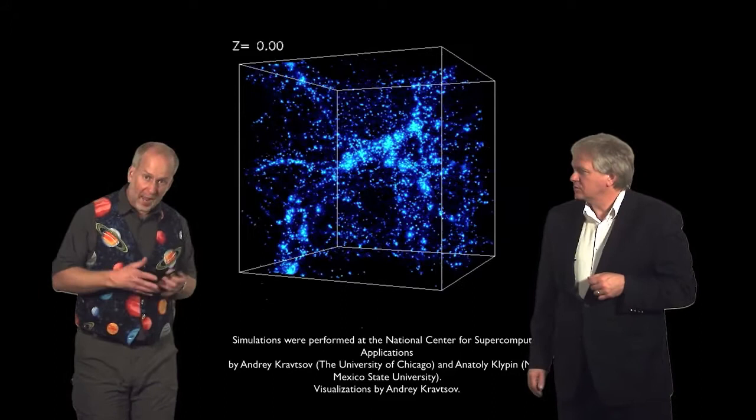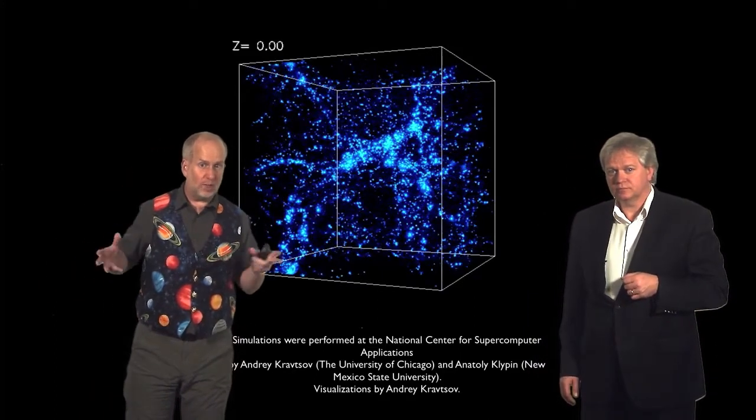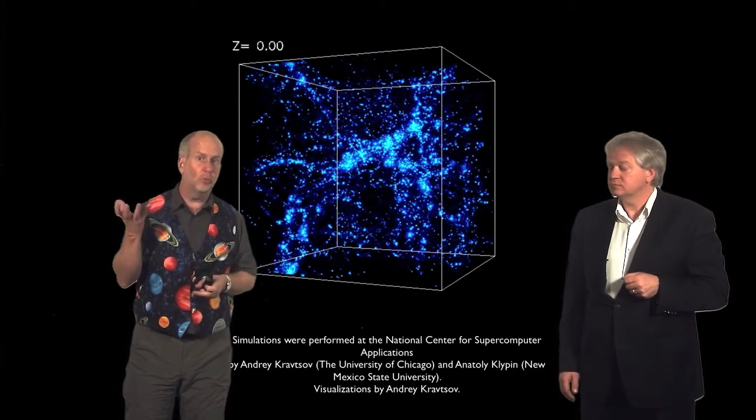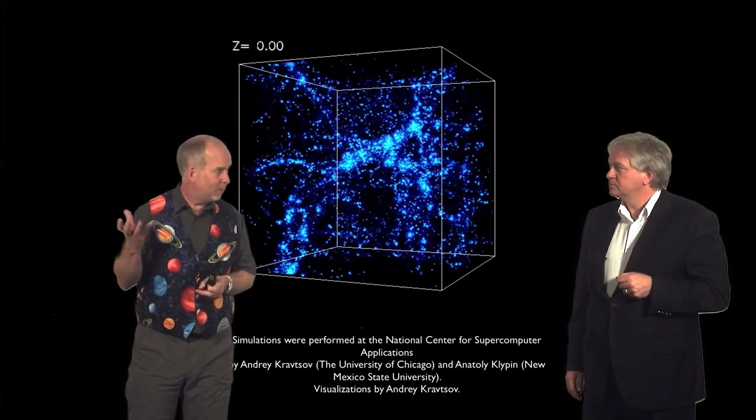So if we have these very small amounts of lumpiness to begin with, they will amplify themselves and become bigger and bigger. The trouble is, where do you get these small fluctuations, what we call inhomogeneities, to begin with?